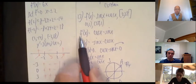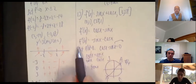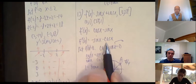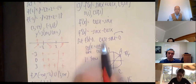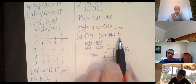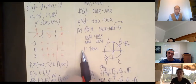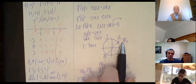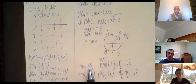Take the derivatives: f′(x) = cos x - sin x. f″(x) = -sin x - cos x. Set f′(x) = 0: cos x - sin x = 0, so cos x = sin x, which means tan x = 1. That occurs at 45° and 225°, or in radians x = π/4 and x = 5π/4.